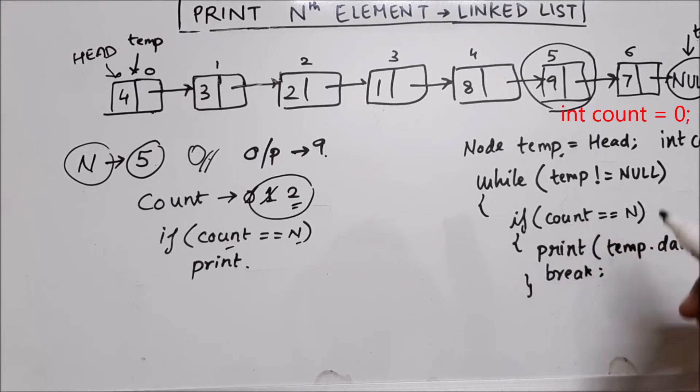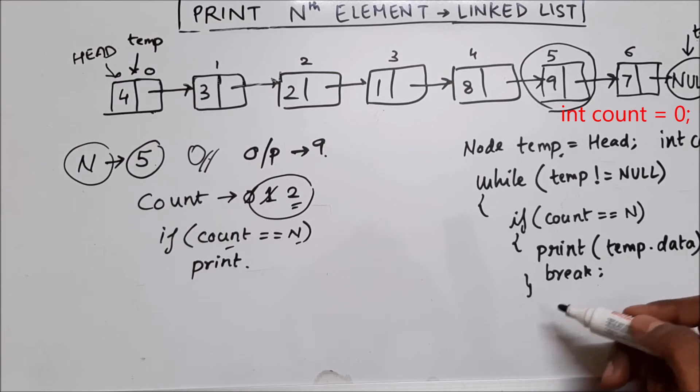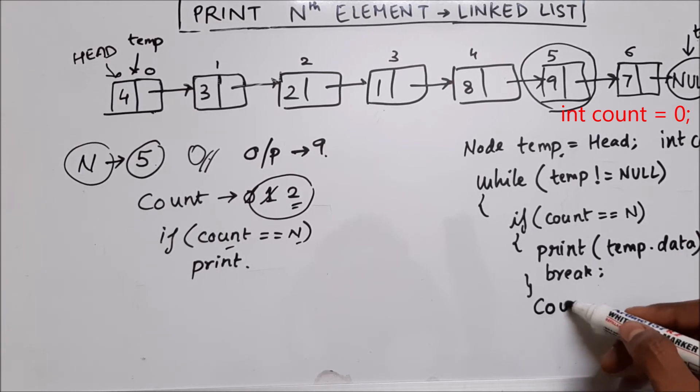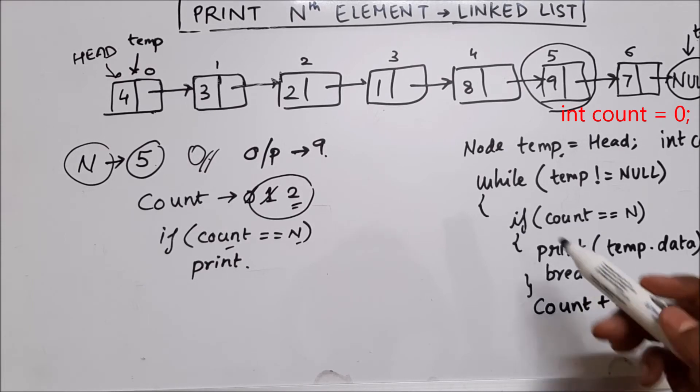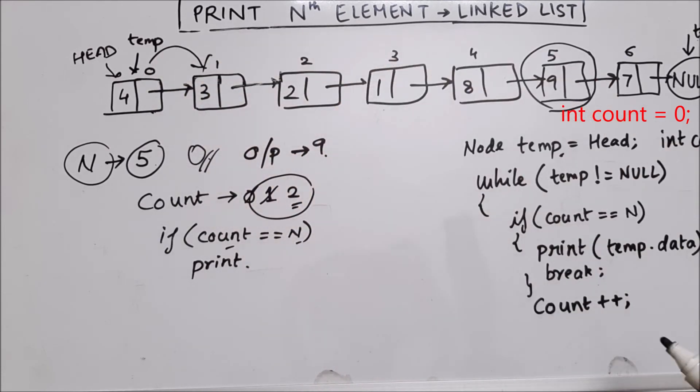So we will print and break. What if count is not equal to n? In that case, first thing, in that case, two things we have to do. One is we have to increment count by one. And we have to make temp to move to the next location. For doing that, we will use temp equal to temp.next.